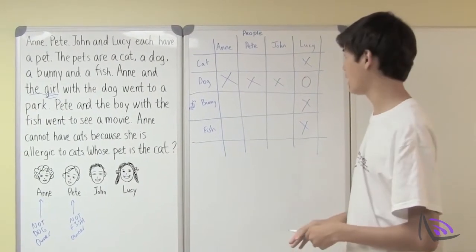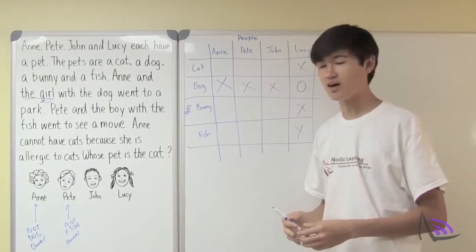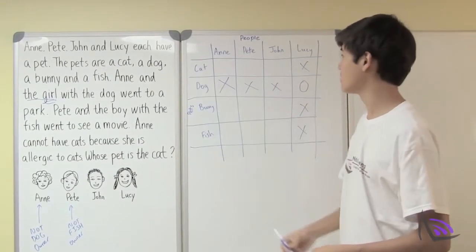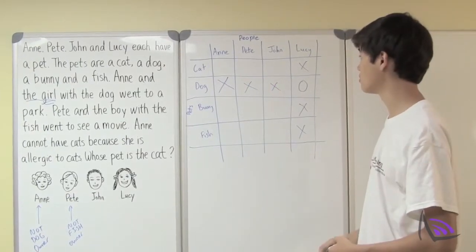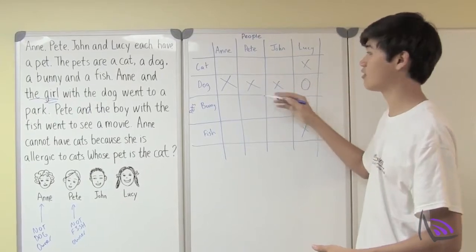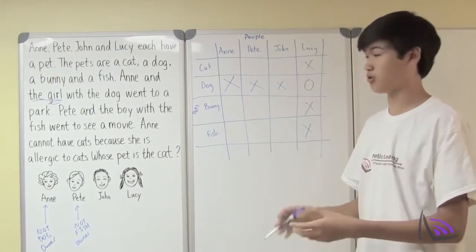So just from this one line that didn't tell us anything about who the owner is, we got a lot of information out just by using what is given and representing it on the table. We found out one owner pet pairing and we crossed out a lot of possible owner pet pairings.